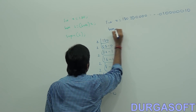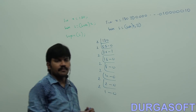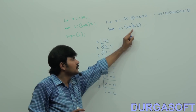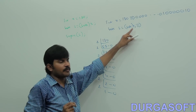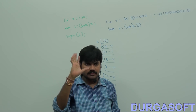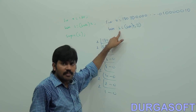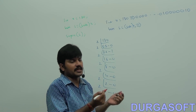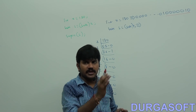Now, byte b is equal to (byte) x. Whenever we are assigning a bigger data type value to a smaller data type variable by explicit type casting, the most significant bits will be gone. Here, how many bits are there? 32 bits. But byte is how many bits? Just 8 bits. So which 8 bits will be considered? Only the last 8 bits will be considered. The most significant bits by default will be gone.